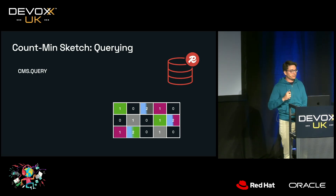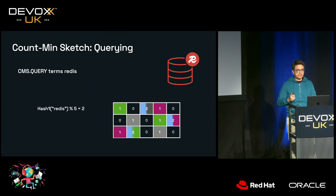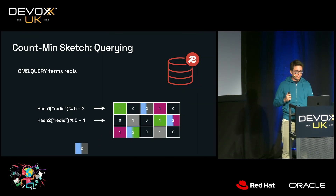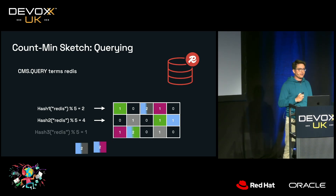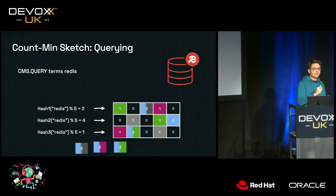Now let's try to query 'Redis' back. For the first hashing function it returns 2, for the second row it also returns 2, and for the third row it also returns 2. So we know Redis had been counted only once — but our CMS is telling us it's probably been counted twice, due to those hash collisions.